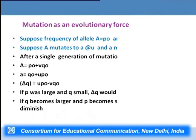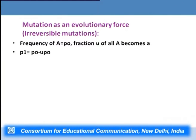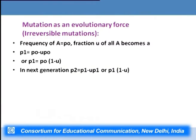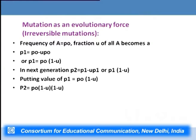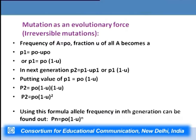For irreversible mutation: if frequency of capital A is P₀ and fraction U of all capital A becomes small a, then P₁ = P₀(1 − U), P₂ = P₀(1 − U)², and in general Pₙ = P₀(1 − U)ⁿ. For example, at a mutation rate of 1 × 10⁻⁵ per generation, the allele frequency will decrease by half its present value every 69,314 generations. Taking human generation time of 20 years, it would require about 1,386,280 years to reduce allelic frequency by half.